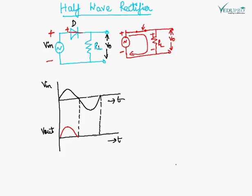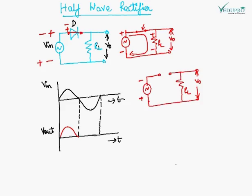When the input becomes negative, this terminal is negative and this terminal is positive, so the anode of the diode gets negative. When the anode is negative, the diode is reverse biased and it behaves as an open circuit. The equivalent circuit is shown here, with the diode represented by an open circuit. In this case, there will be no current in the circuit, so the output voltage will be zero because there will be no voltage drop across the load resistance.